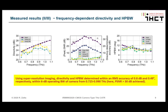In summary, using super-resolution, directivity and half-power beam width were determined within an RMS accuracy of 0.8 dB and 0.49 degrees, respectively, within the 6 dB operating bandwidth of the camera from 0.725 to 0.99 terahertz. In this range, we achieved a peak SNR larger than 30 dB.